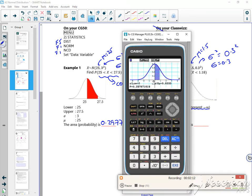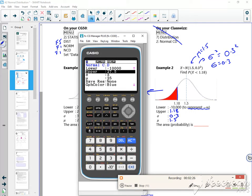So if I bring up the calculator, just need to write on my page. My lower is minus 10,000, my upper is 1.18, sigma this time is 0.3.